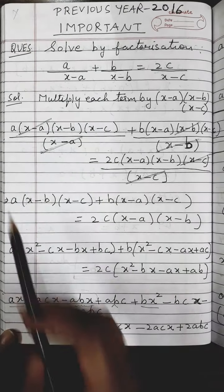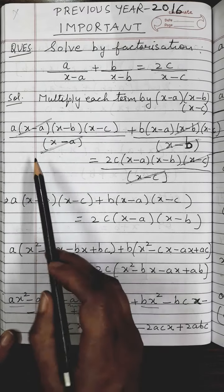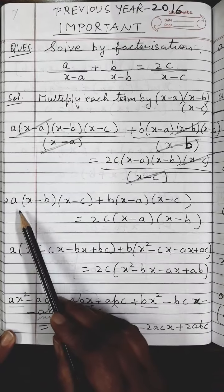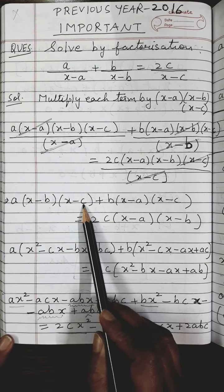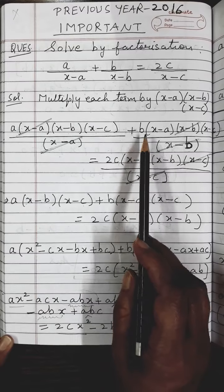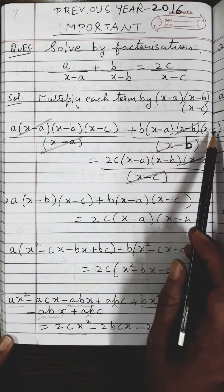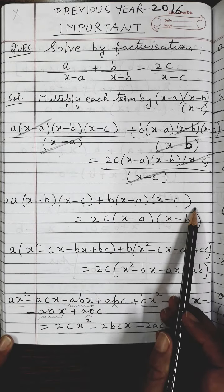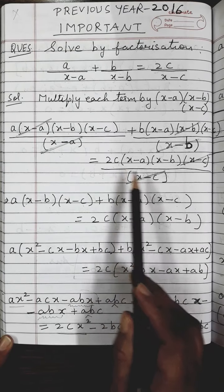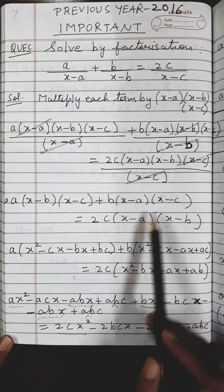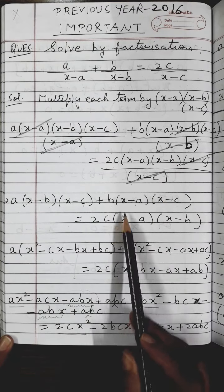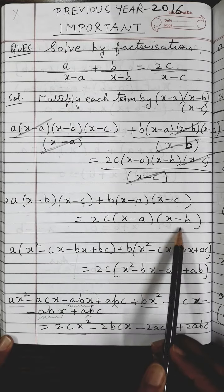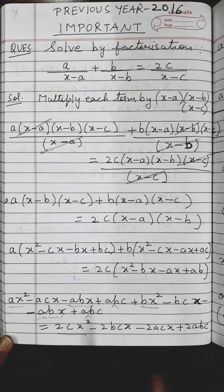What you are left with: first term is a into x minus b, into x minus c. Plus second term b into x minus a, into x minus c. On the right side, 2c into x minus a, into x minus b. The denominators have now vanished.